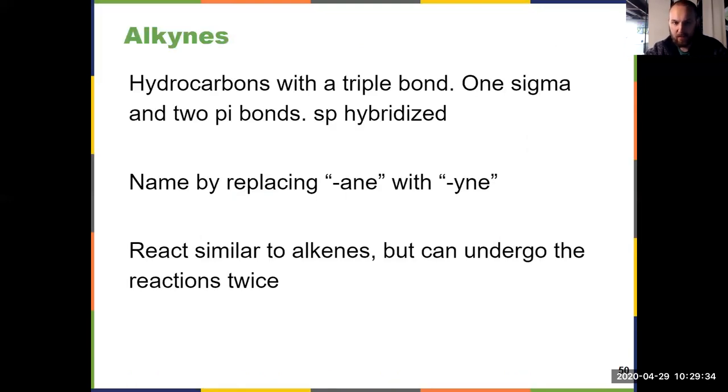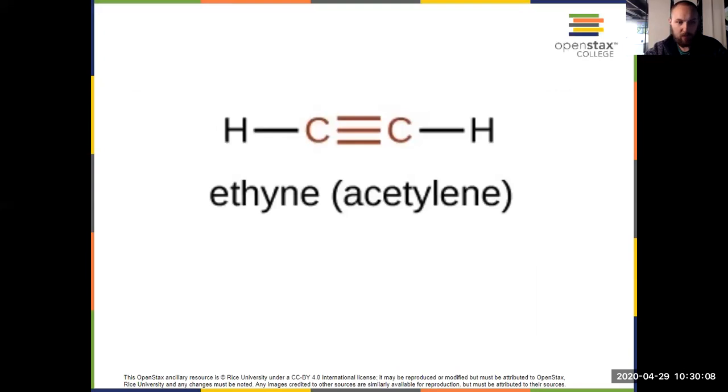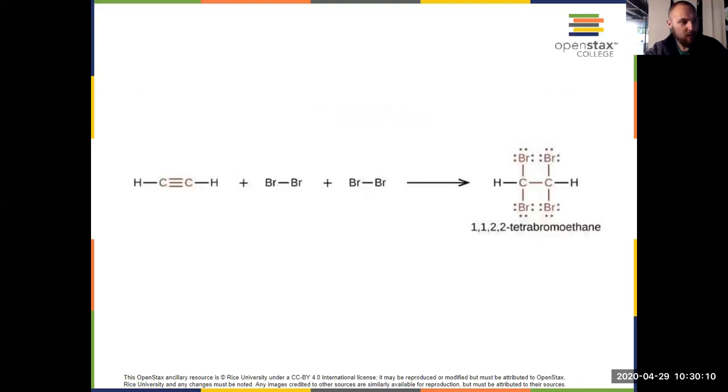And that brings us to alkynes. Definition of an alkyne is a hydrocarbon with a triple bond. Remember a triple bond is a sigma bond and two pi bonds, sp hybridized on those carbons, therefore linear geometry. General formula for an alkyne is CnH2n minus two. These guys are named by replacing Ane from the parent alkane with Yne. Again, right in the name. And these guys can react similar to alkenes, but because they have two pi bonds, they can undergo the reactions twice. We see that here. Here's an example of an alkyne with ethyne. Here's an example of an addition reaction with an alkyne.